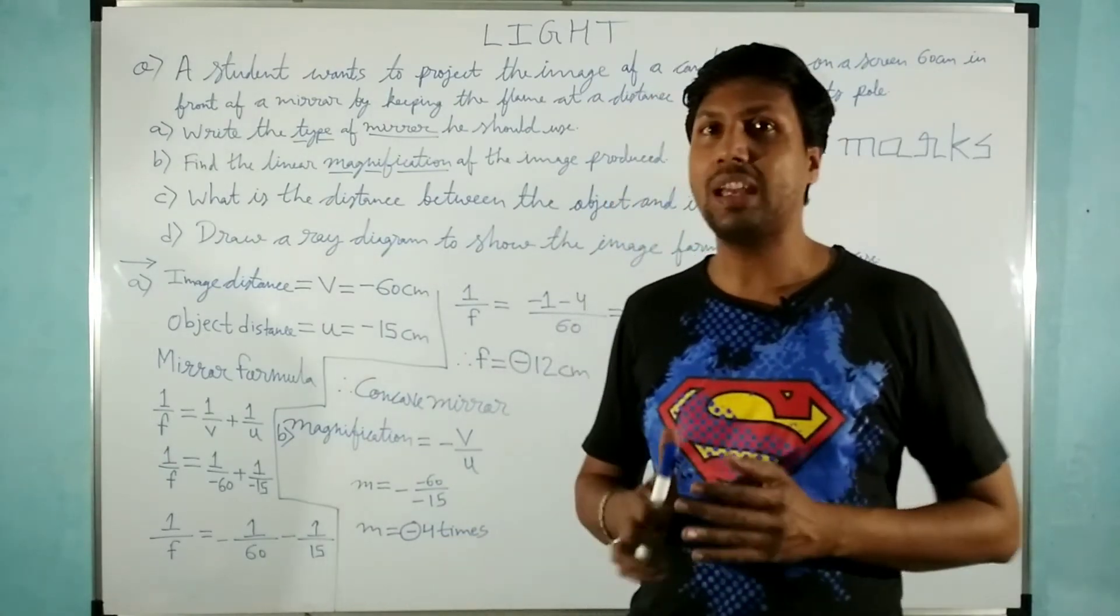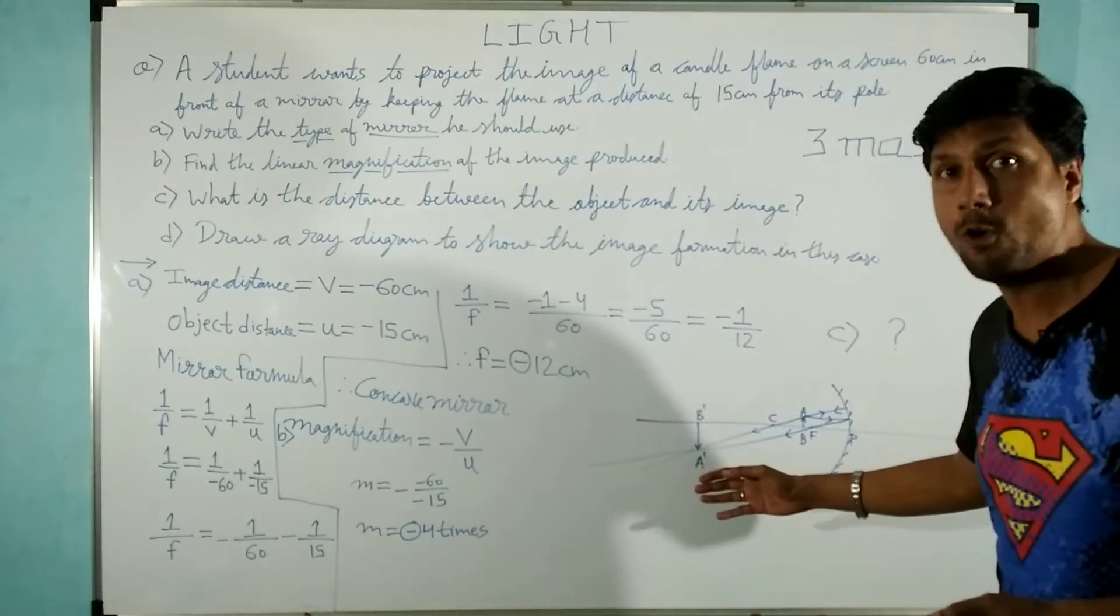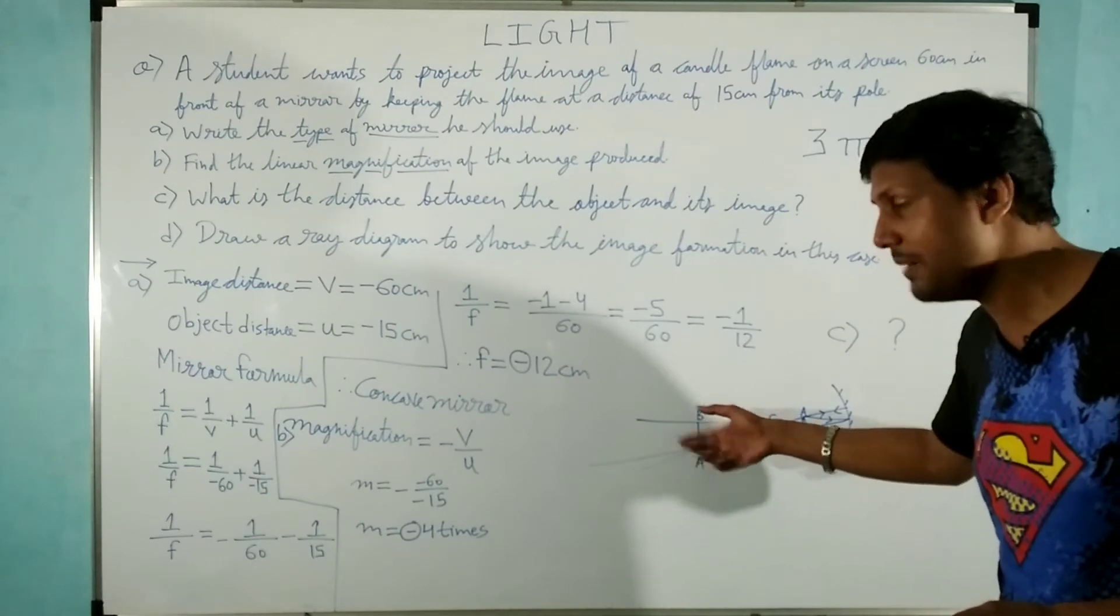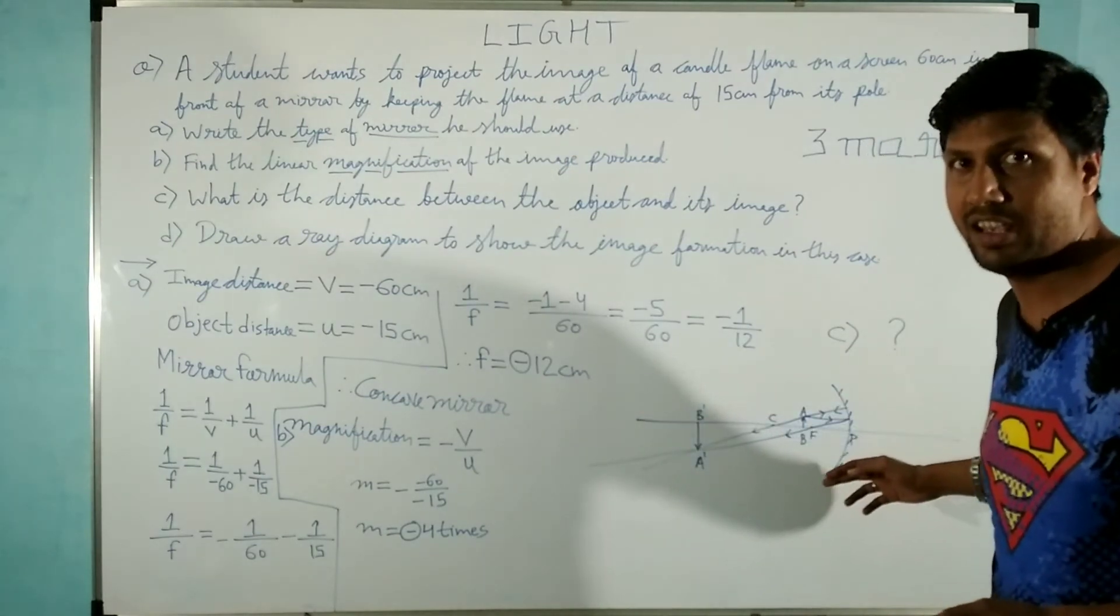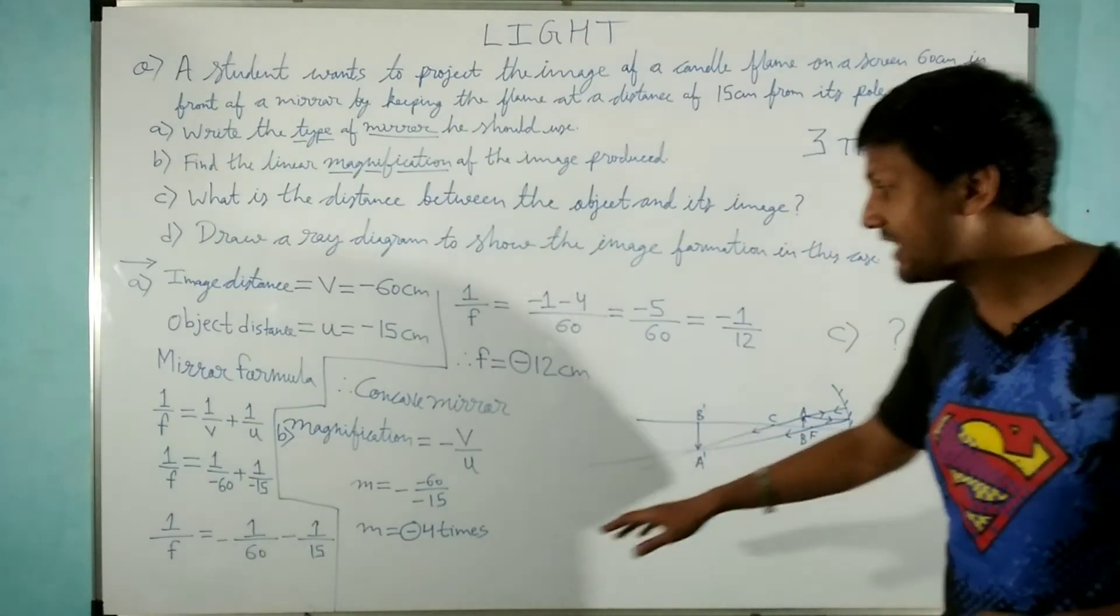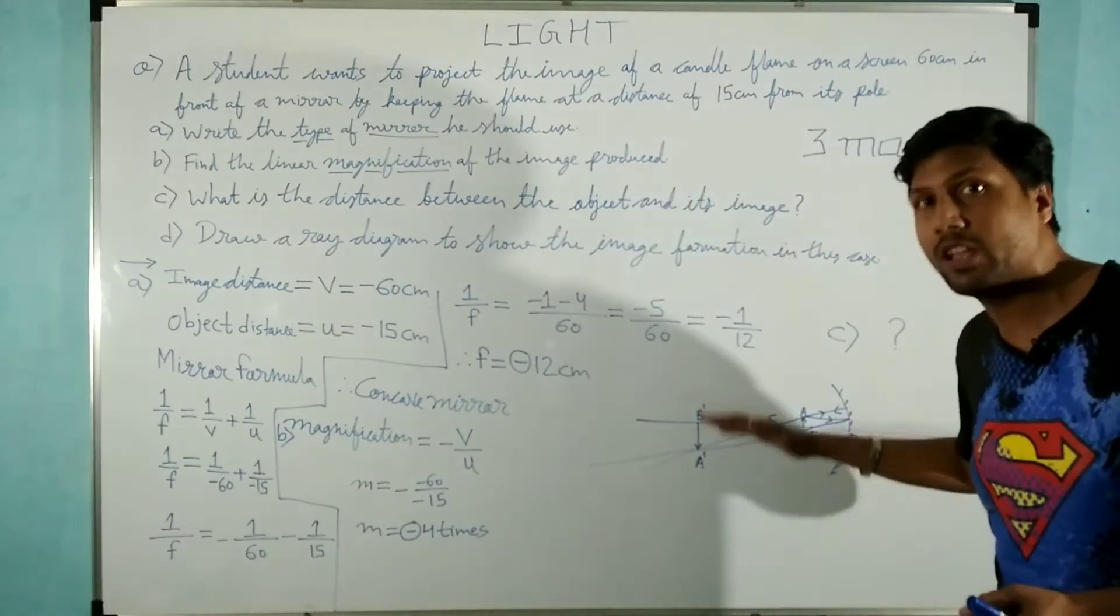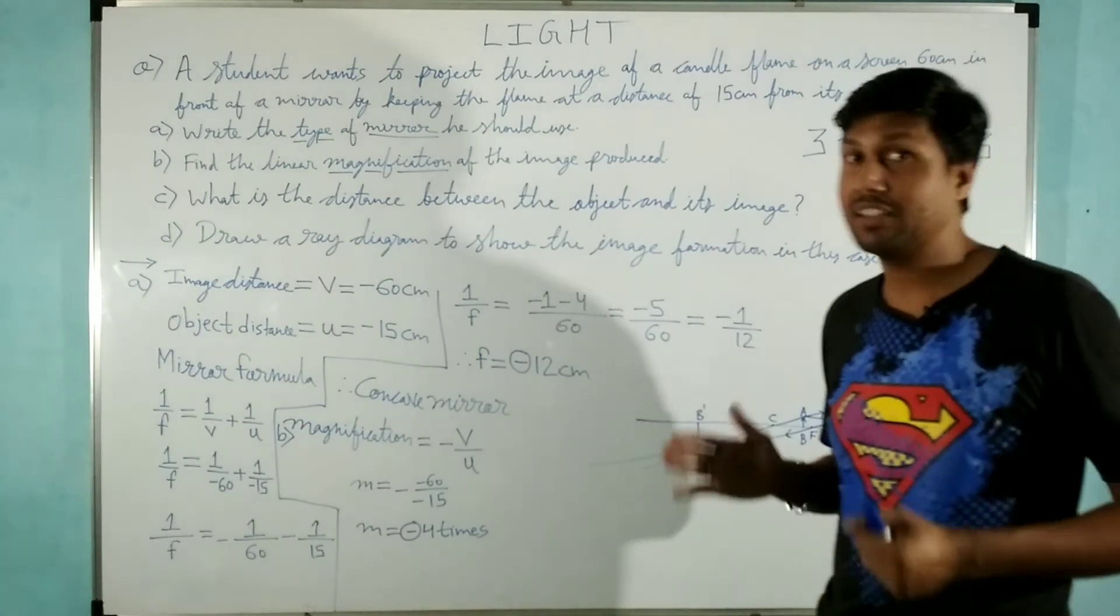The minus sign indicates that the image formation is on the y axis negative side, below the principle axis. What did I say? I said that the minus sign indicates that the image is forming below the principle axis. That's the thing.